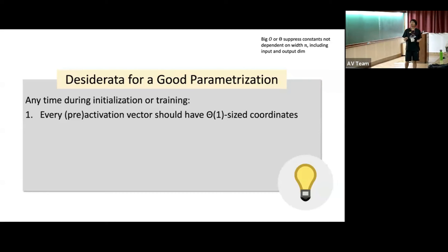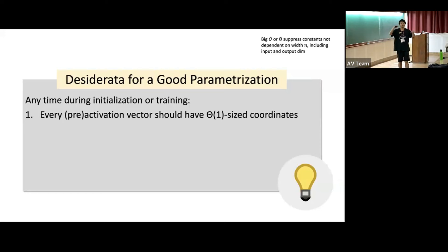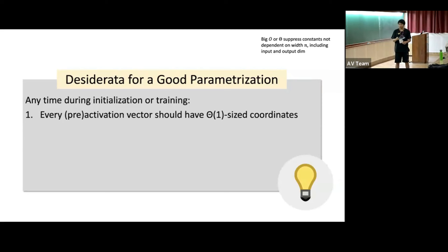All big-O or big-Θ notation will indicate scaling with width n. Activations and pre-activations should have constant size coordinates, which is very natural: for nonlinear functions like tanh, the effective range is a constant interval around zero. If the input to tanh grows to infinity it becomes a step function; if concentrated near zero it's linear. So the pre-activation being constant size is natural, and as a result the activation should also be constant size.